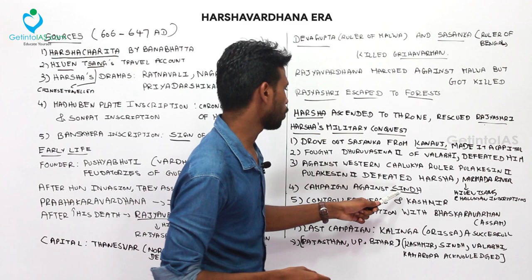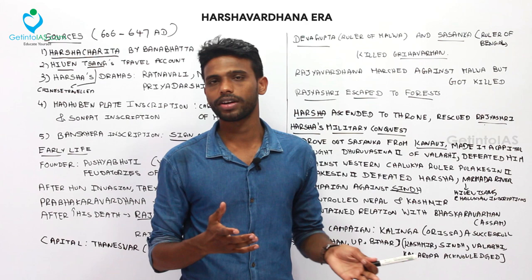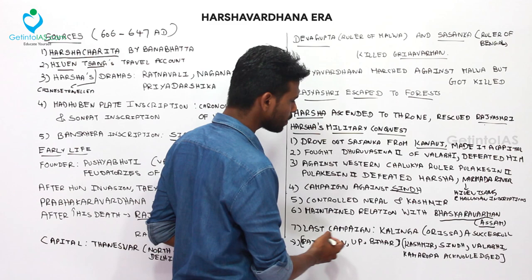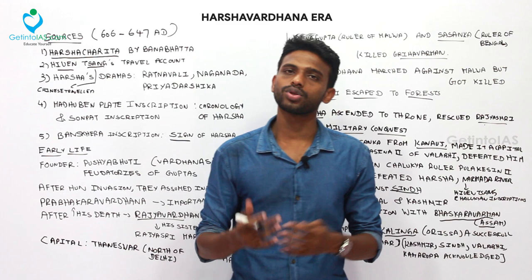Harsha also controlled Nepal and Kashmir, which were feudatories of his dynasty. He maintained good relations with Bhaskaravarman, the ruler of Assam. His last campaign was against Kalinga in Orissa, which was successful. The only defeat Harsha faced was against Pulakesi II while attempting to march south of the Narmada River.